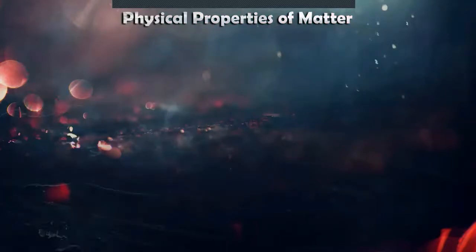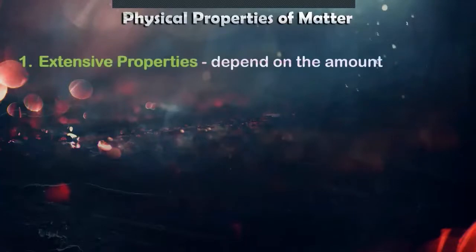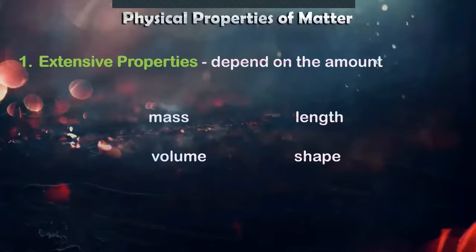And types of properties, types of physical properties, we can also describe an object through its extensive properties. It depends on the amount of an object. Example: mass, length, volume, shape. So if we are asked to describe the extensive property of ourself, that would be our height, our weight, and our vital statistics. So that's measurable. Extensive is more on measurable. Example: for a bond paper, A4, that's extensive property, long, short.